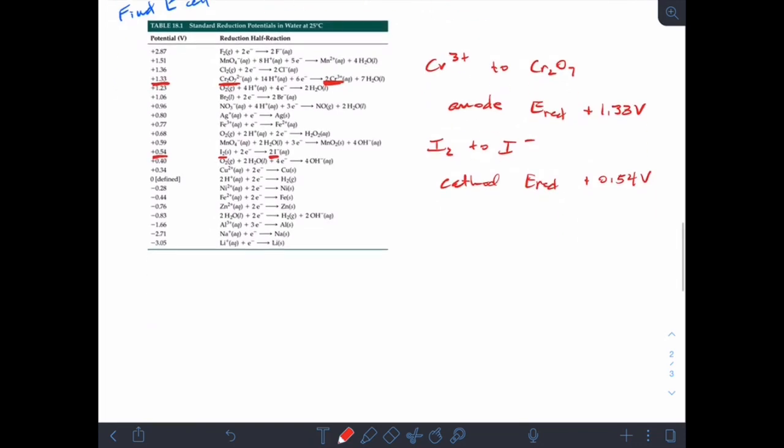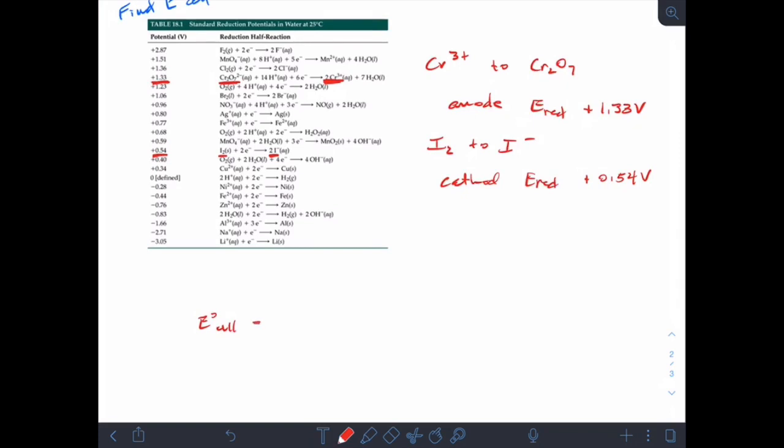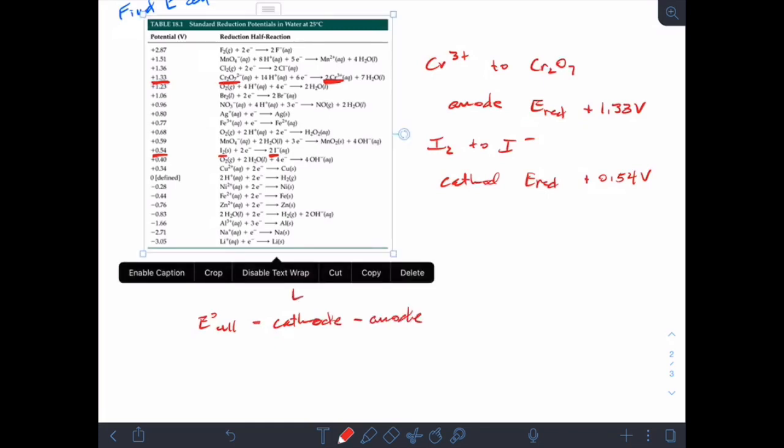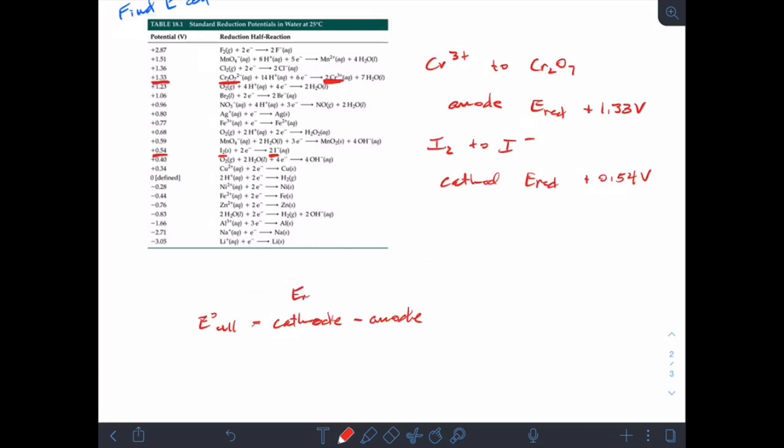So E0 cell is simply cathode minus anode. And these are the reduction potentials. So plus 0.54 minus plus 1.33 volts gives us a E0 of minus 0.79 volts.